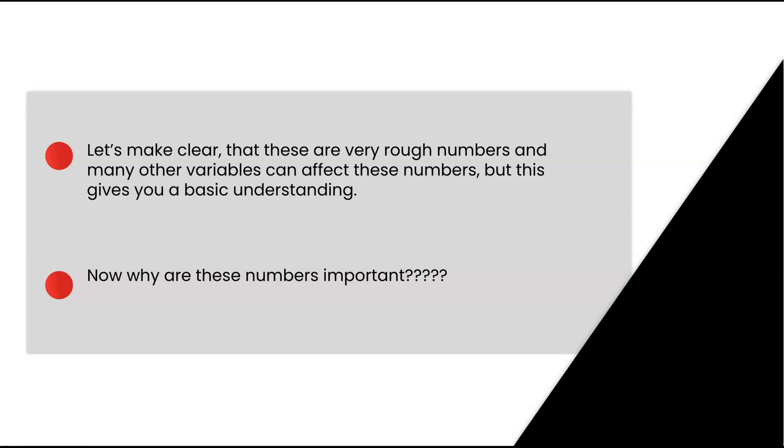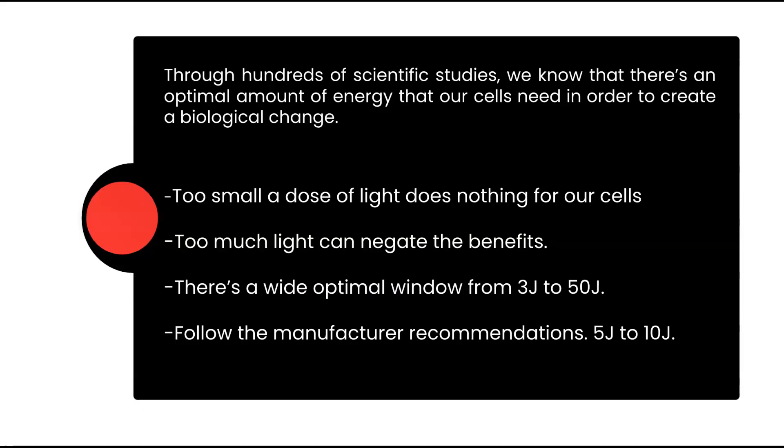Why are these numbers important? Why does 5 joules, or 53 joules, matter? Through hundreds of scientific studies, we know that there is an optimal amount of energy that our cells need in order to create a biological change, meaning the cells start producing more ATP. Unfortunately, the science has varying ranges, but we can agree that too small a dose of light does nothing for our cells, and too much light can negate the benefits or possibly have a deleterious effect.